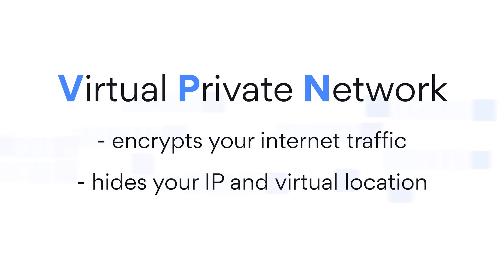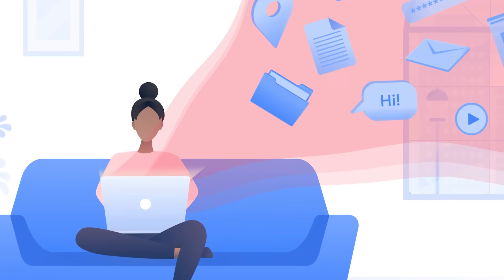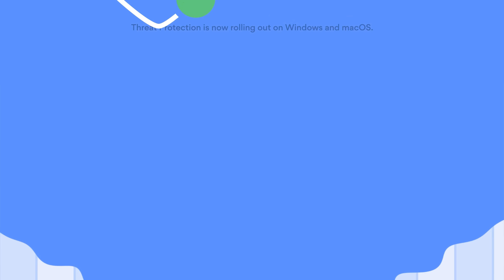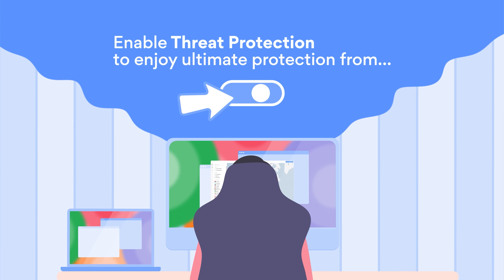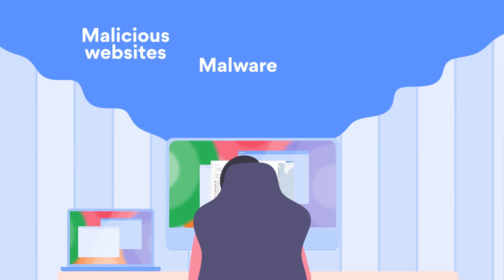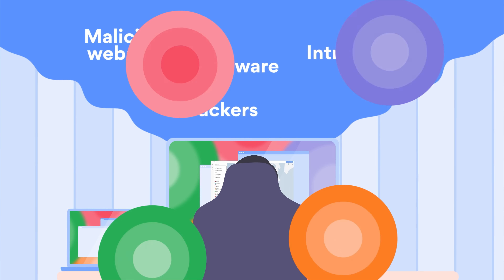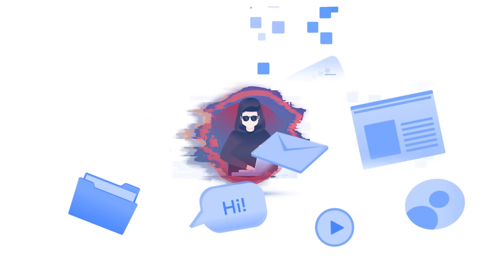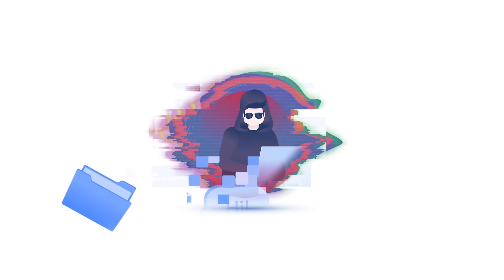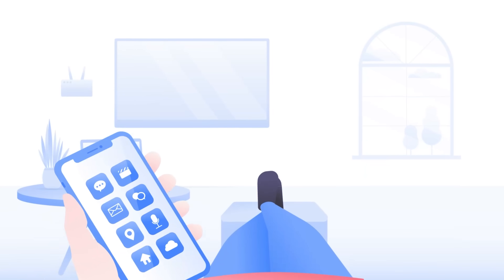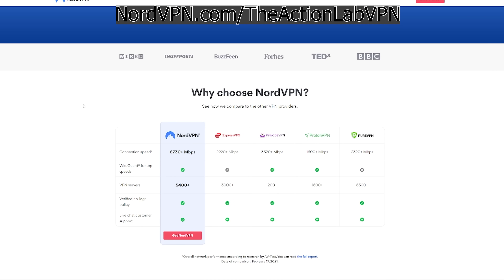I'd like to thank NordVPN for sponsoring this video. NordVPN uses military-grade encryption to keep you anonymous when you're using the internet. It uses thousands of servers all over the world and it can bypass internet firewalls. NordVPN is also implementing a browser add-on called Threat Protection, which will help protect you from malicious websites, malware, and trackers, even if you aren't currently connected to the VPN. If you don't use a VPN, everything you do over your internet connection can potentially be hacked or seen by your internet provider. If you'd like to secure your and your family's internet usage, head over to NordVPN.com/theActionLabVPN. Now let's get back to our experiment.